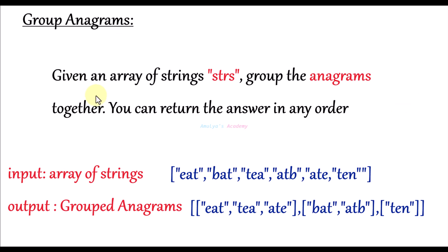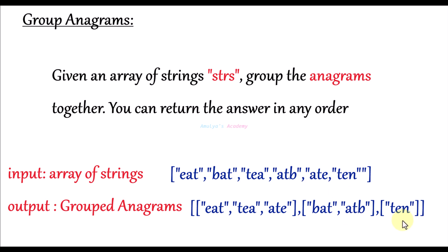Here is the problem statement: given an array of strings, group the anagrams together. You can return the answer in any order. The input is an array or list of strings, and the output is grouped anagrams. This is the first list of grouped anagrams, the second group, and the third group. Strings in the list consist of lowercase English letters.